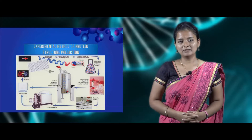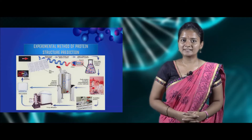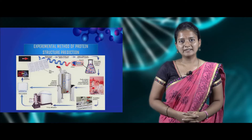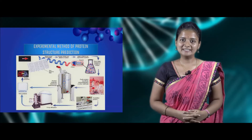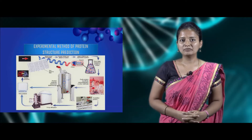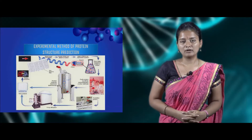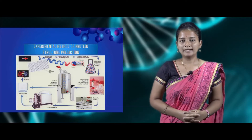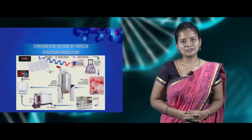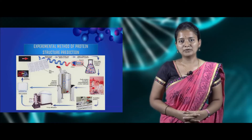For doing the experimental method, we have to get the protein of interest or gene of interest, and we have to create a cDNA library or extract cDNA, then insert it into an expression system. After that we grow the cDNA in a culture vessel and purify the protein by chromatographic technique, so that we can go for NMR spectroscopy, X-ray crystallography, or cryo electron microscopy. After any one of these analyses we'll get the final protein structure.